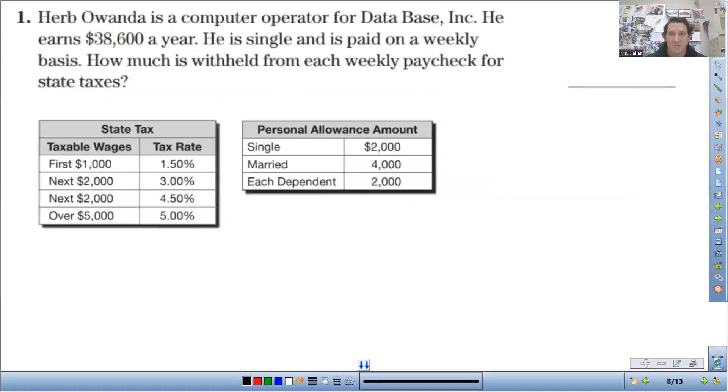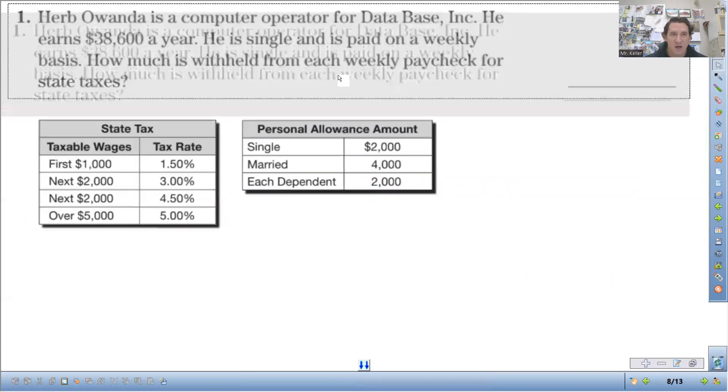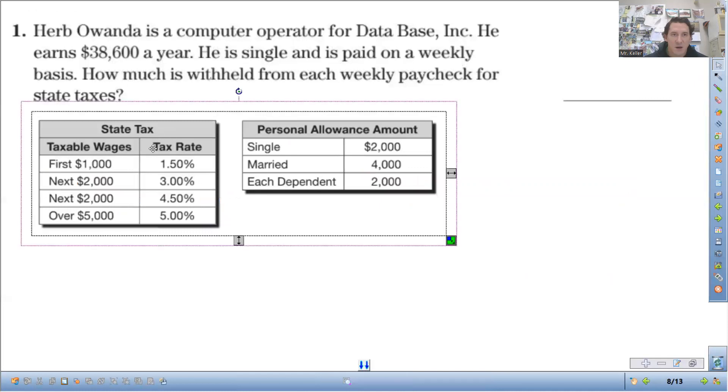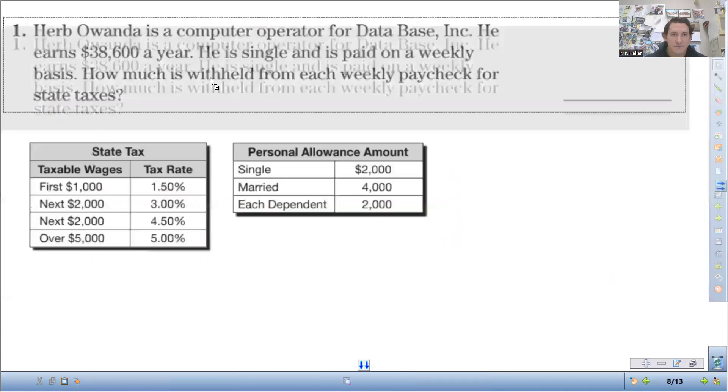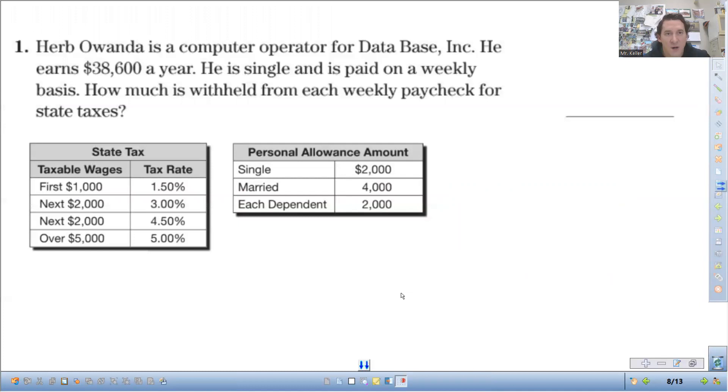Let's look at an example from the book. Herb Owanda is a computer operator for Data Base, Inc. He earns $38,000 a year. He is single and is paid on a weekly basis. How much is withheld from each weekly paycheck for state taxes? So how we're going to do this?